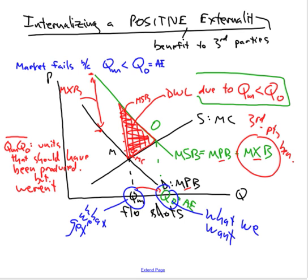Why is there a deadweight loss? It's a Goldilocks problem — it's not all or nothing. It's not inefficient to produce flu shots; it's not like a public good where we won't get any from private firms. We'll get some, we'll just get too little. In the case of a negative externality, it's not that all paper production is evil — it's that we get too much. Here, we get too little healthcare; too few people get flu shots because of the positive externality those flu shots produce. So once again, we have a policy problem for the government: how can the government internalize this externality and get rid of that deadweight loss?